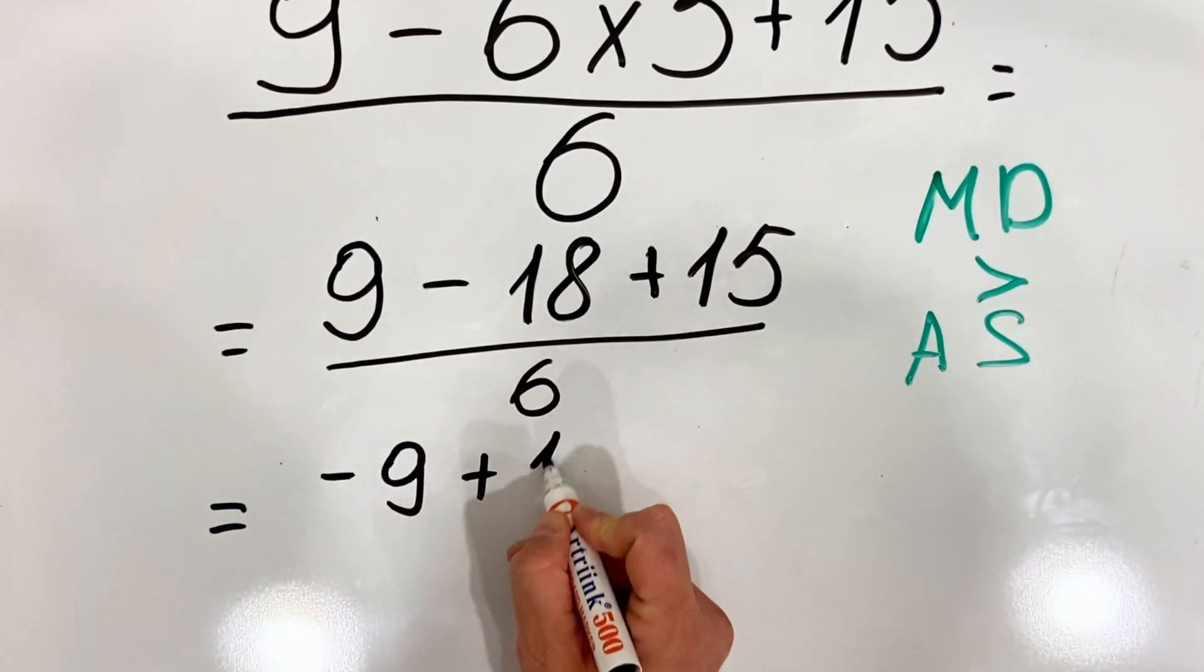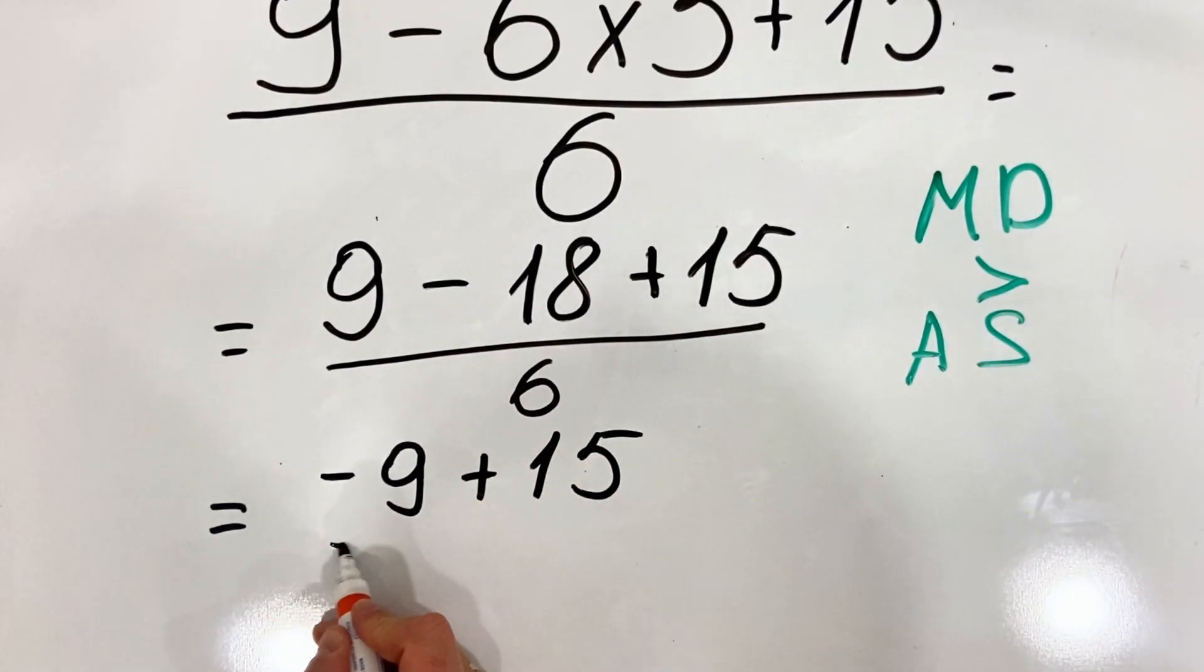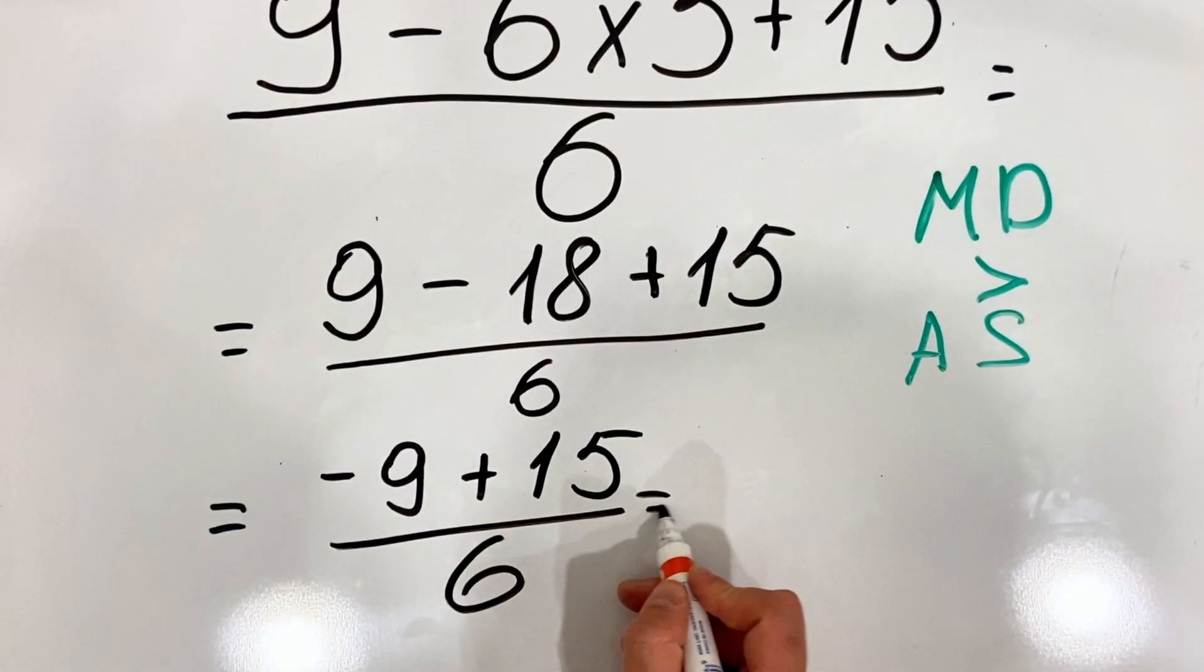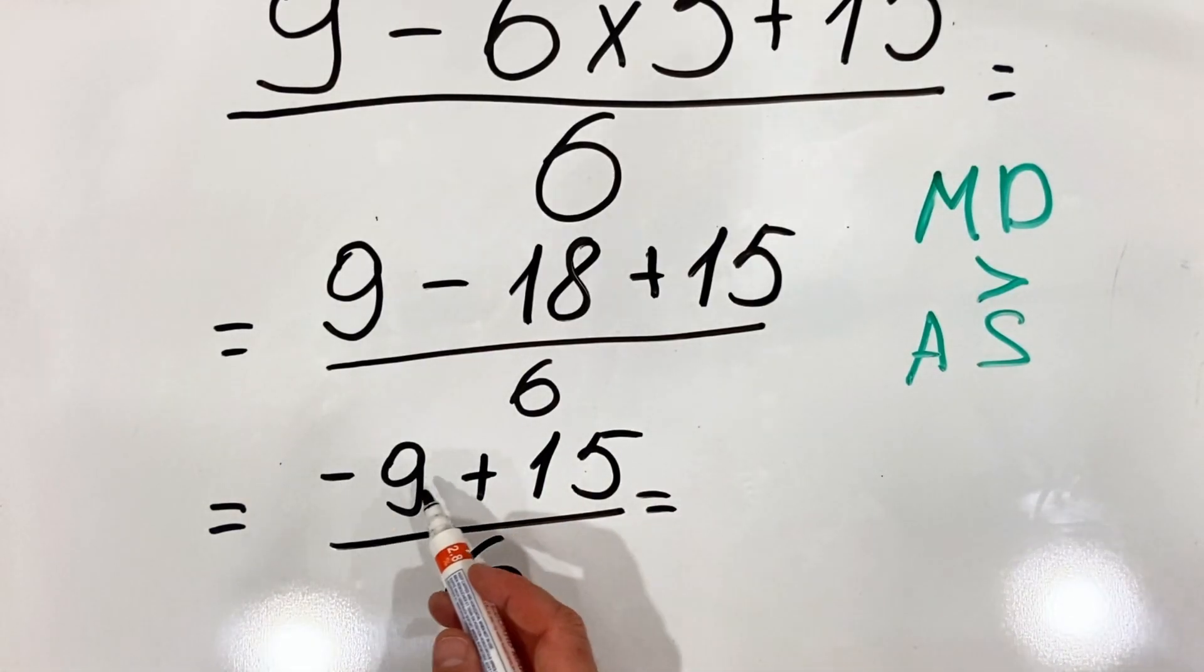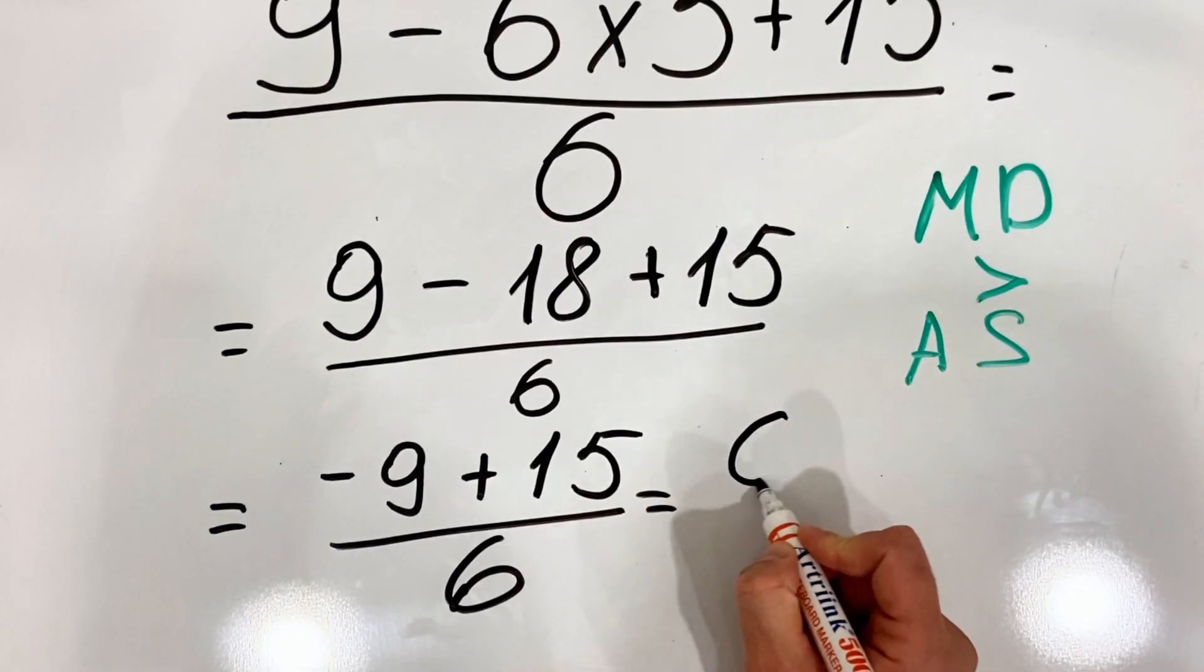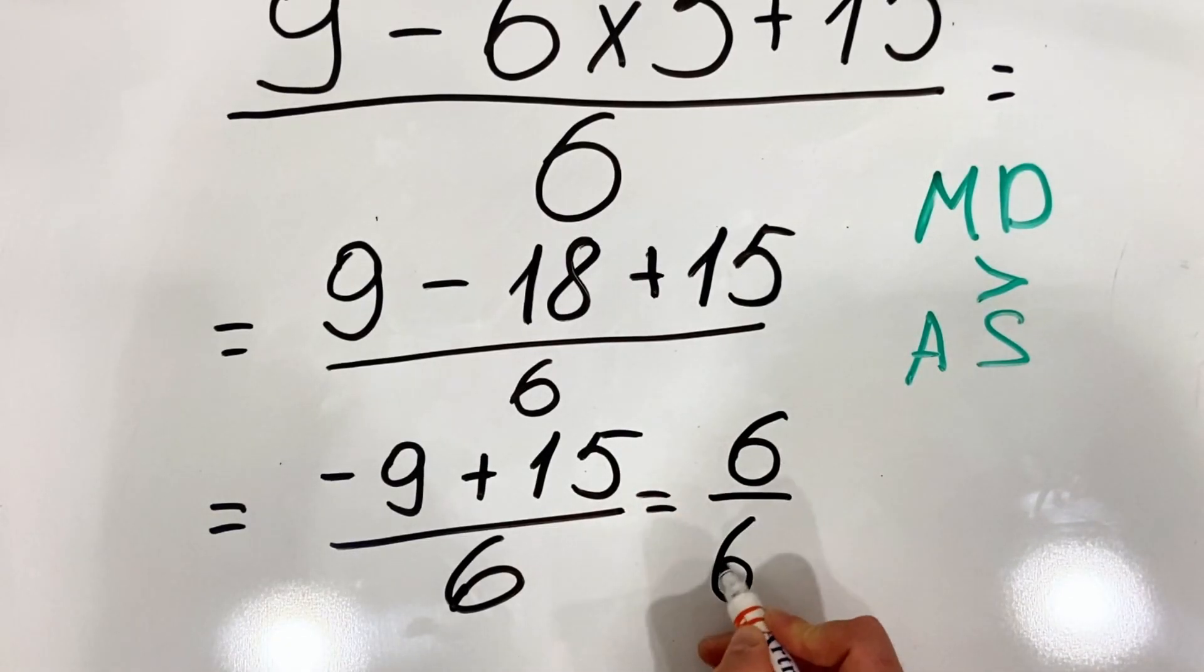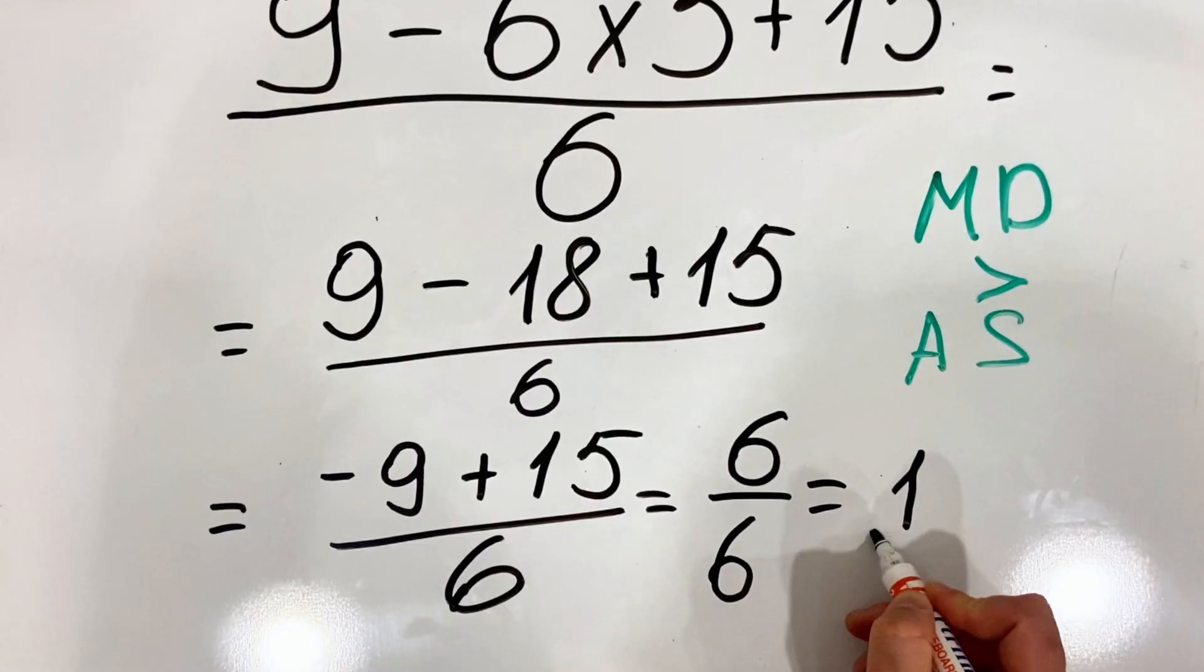Plus 15 over 6. Here we have minus 9 plus 15 is 6, so we get 6 over 6, which equals 1.